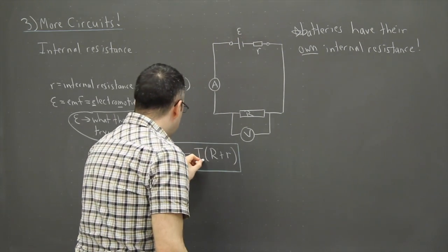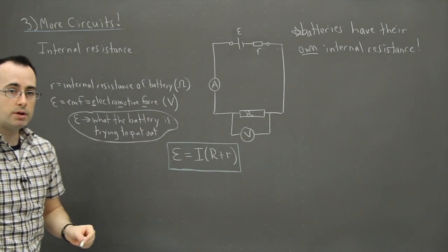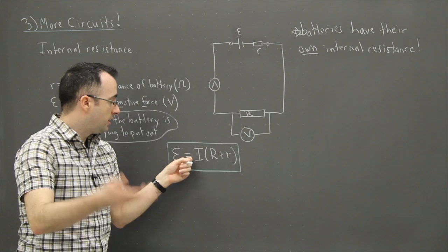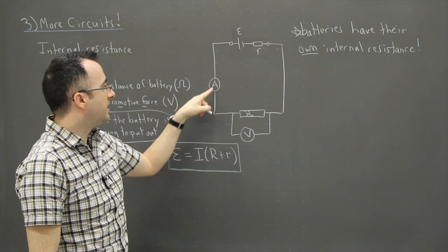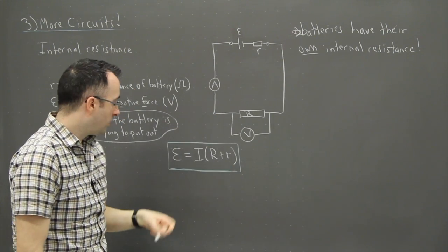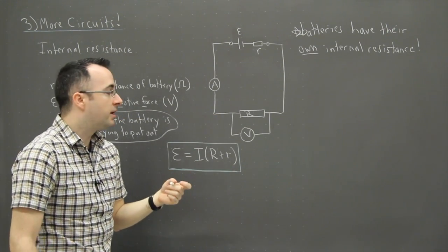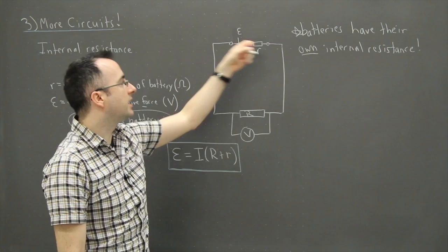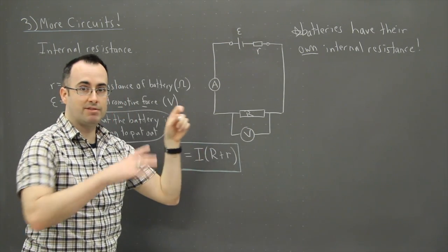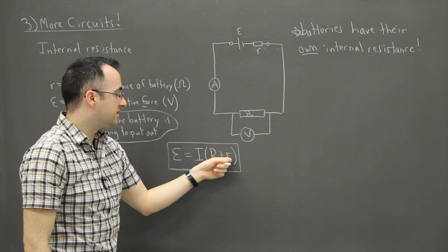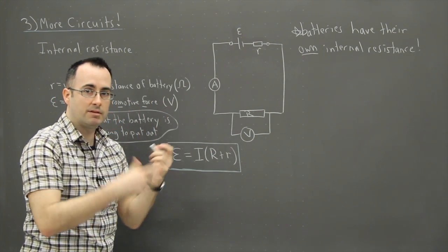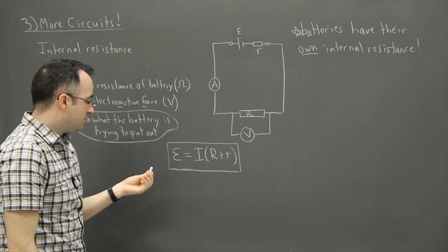The EMF is equal to I, which is the current. Remember that current is going to be the same here as it is here as it is here. That current doesn't matter where it is. The important thing is that this big R, that's the resistance of the circuit, and this one right here is the resistance of that little mini tiny resistor that's in the battery.